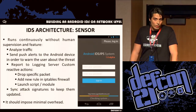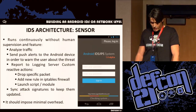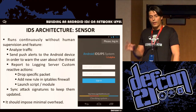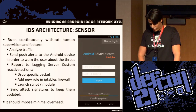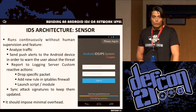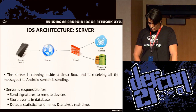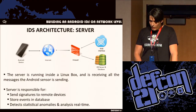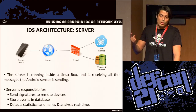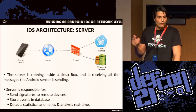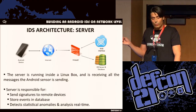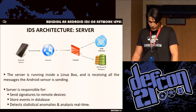The sensor reports through a logging server — you can do it by syslog, you can create a VPN tunnel — and it performs custom reactive actions like dropping packets, adding new rules to IP tables, or launching scripts. It should impose minimal overhead on the device. On the other side we have the server, a Linux box responsible for collecting all traffic, sending updated signatures to the device, and storing events in a database. We can also do statistical analysis of packets on the server instead of the mobile device, and use any SIEM or correlation tool to add IP reputation and attack correlation.